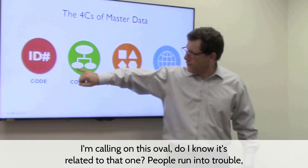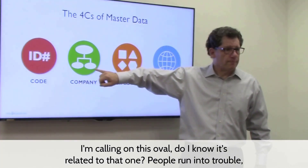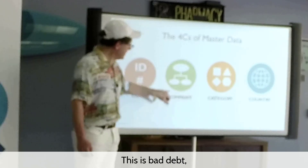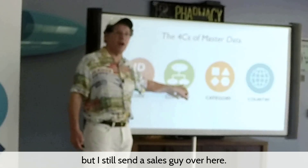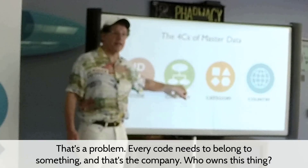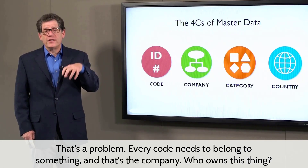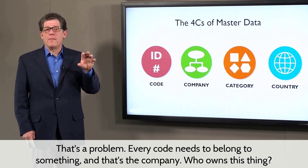If I'm calling on this one, do I know it's related to that one? People run into trouble — this is bad debt, but I still sit and sell this guy over here. That's a problem. Every code needs to belong to something, and that's the company. Who owns this thing?